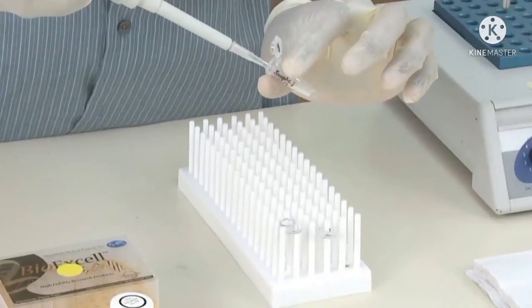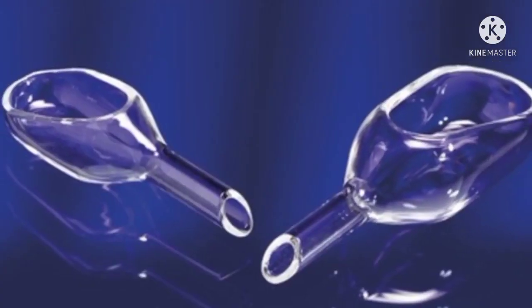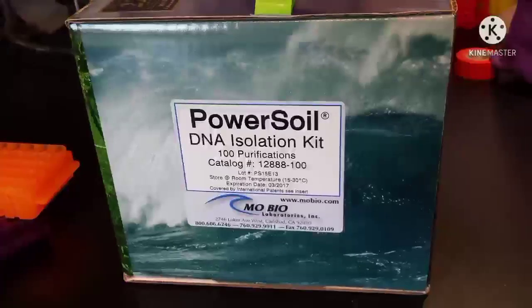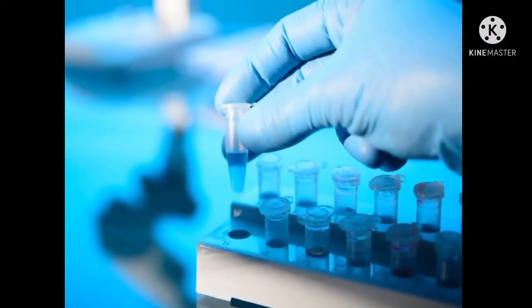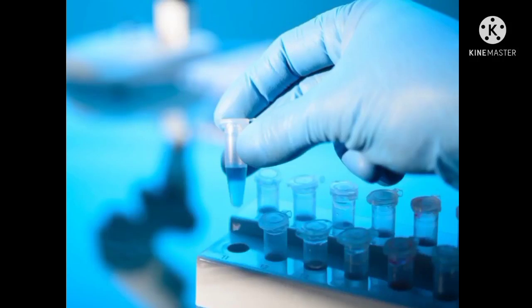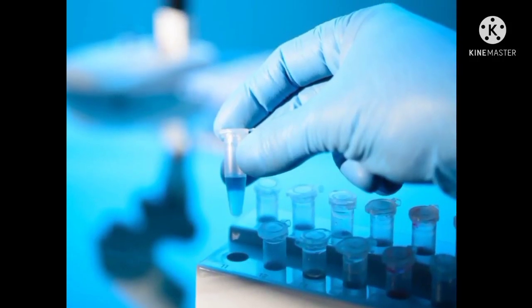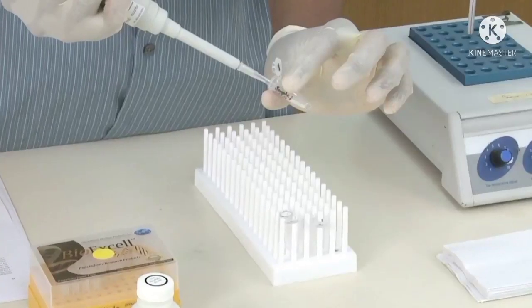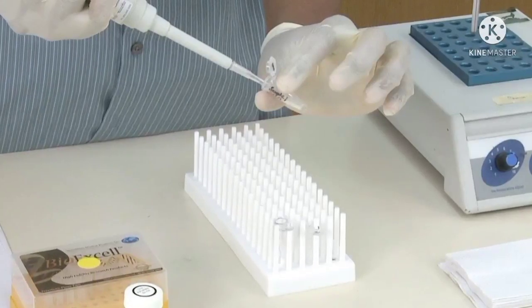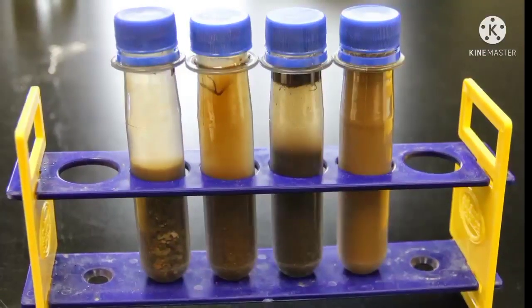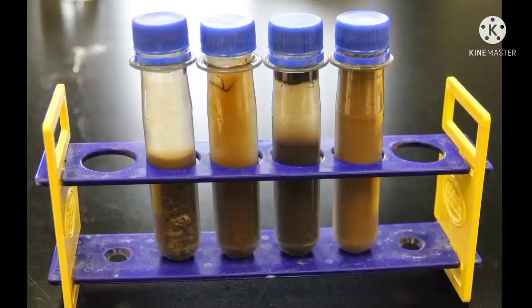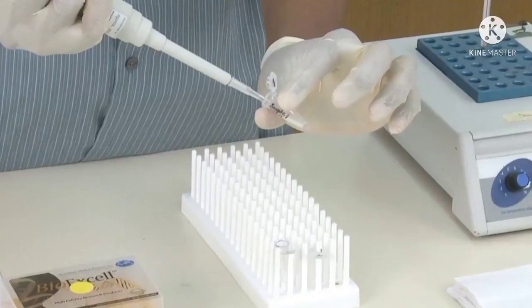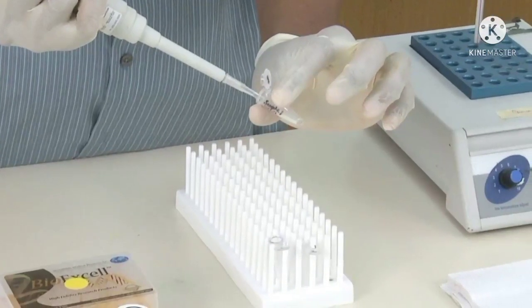First add 0.25 gram soil to power bead tubes using a weighing funnel. Gently vortex to mix. Add 60 microliters of solution C1 to the tube and invert several times or vortex briefly to mix. Vortex at maximum speed for 10 minutes followed by centrifugation. Transfer the supernatant to a clean 2 ml tube. Supernatant may still contain some soil particles. Carry over of soil or dark particle color in the mixture is normal at these steps.